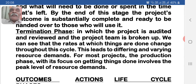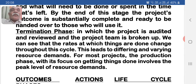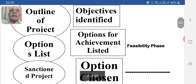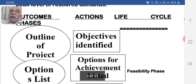Termination phase: in which the project is audited and reviewed and the project team is broken up. We can see that the rates at which things are done change throughout the cycle. This leads to differing and varying resource demands. For most projects, the production phase with its focus on getting things done involves the peak level of resource demands.